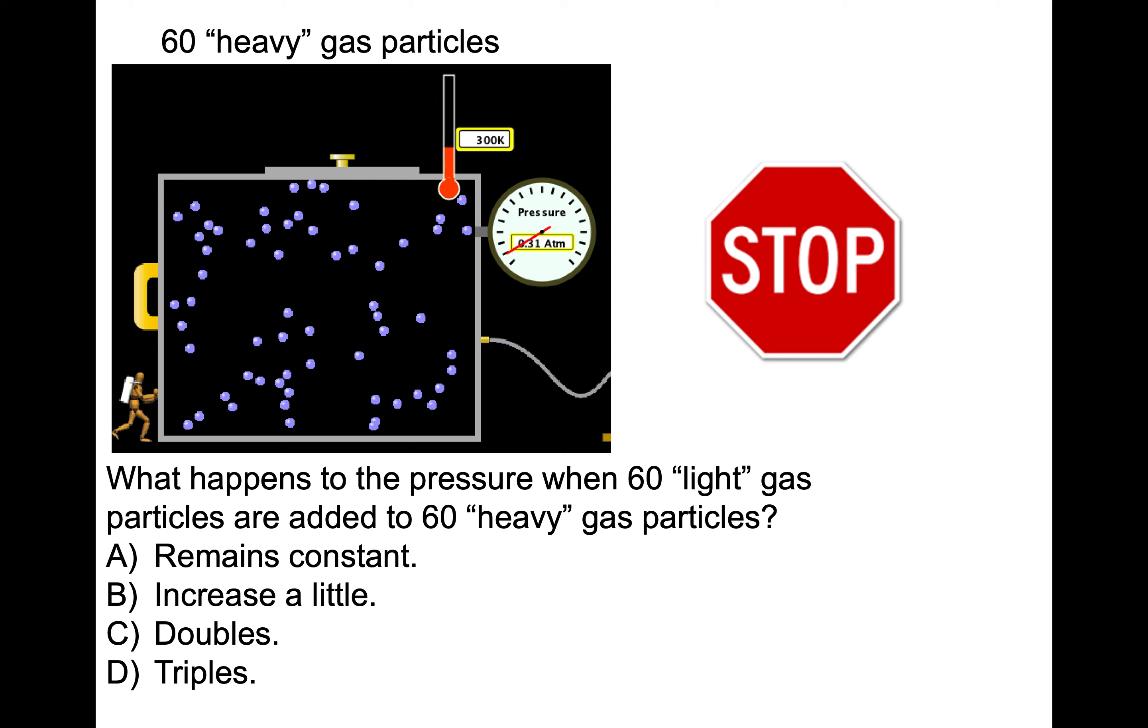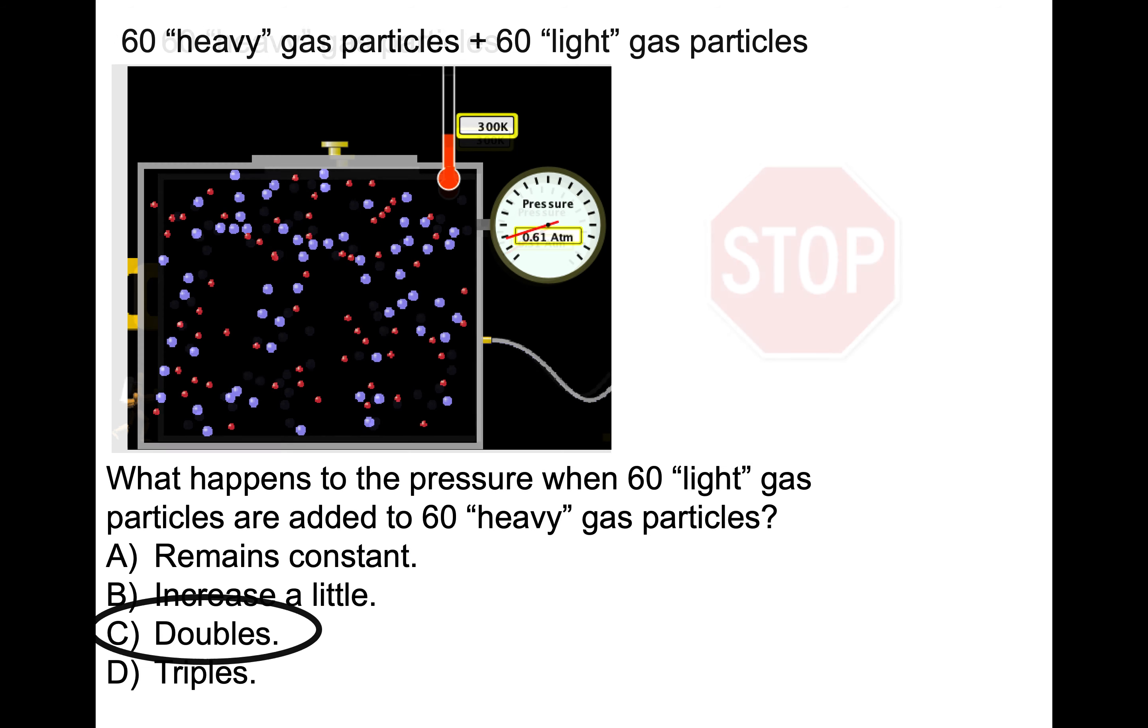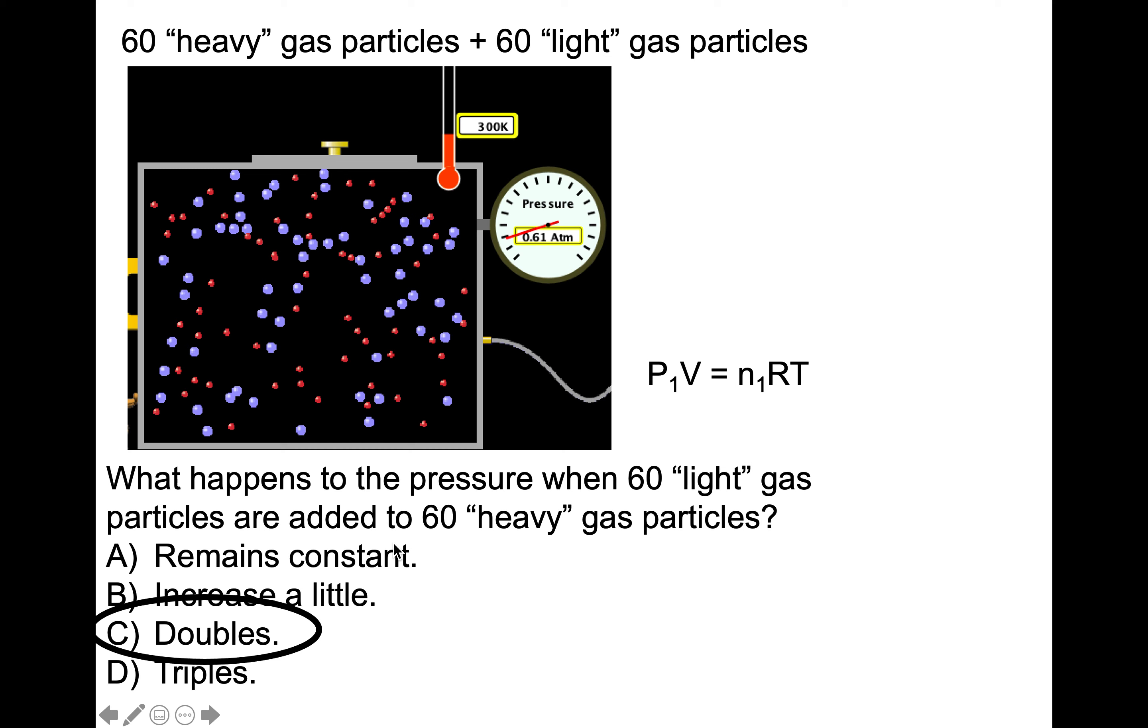Within that static image, the temperature is at 300 K and the pressure is around 0.3 atmospheres. Here's the image when 60 light particles have also been added. The temperature remains at 300 K and the pressure has doubled. What's going on in this case? Let's consider these to be ideal gases. So let's say we use PV equals nRT for the heavy gas particles. We have a particular number of those that are exerting a pressure.